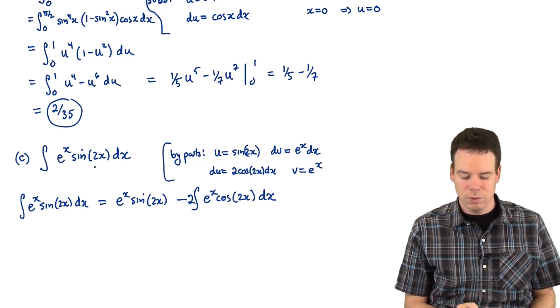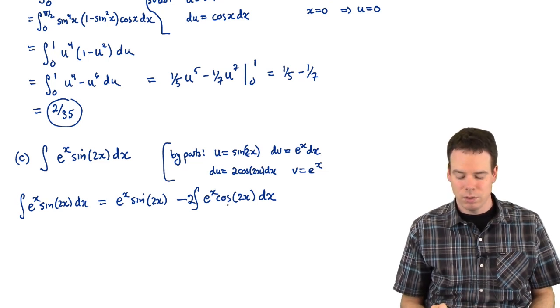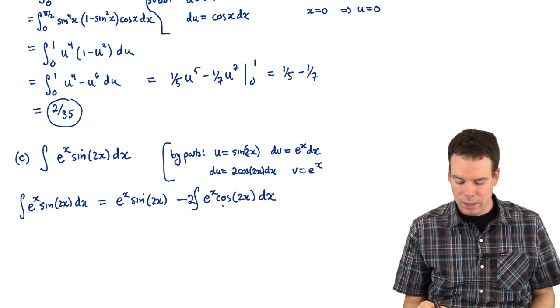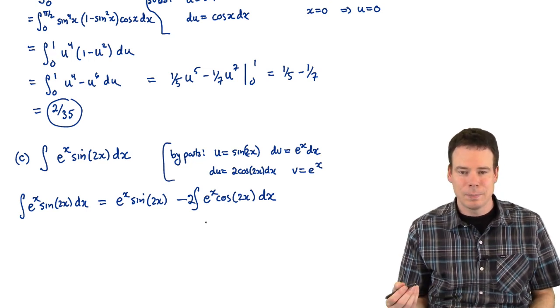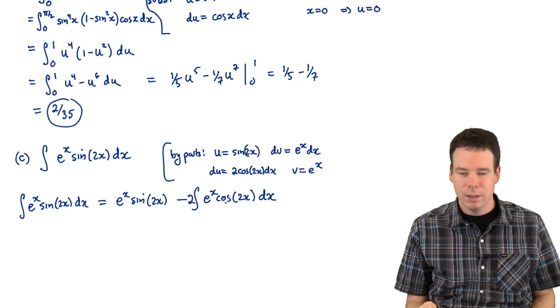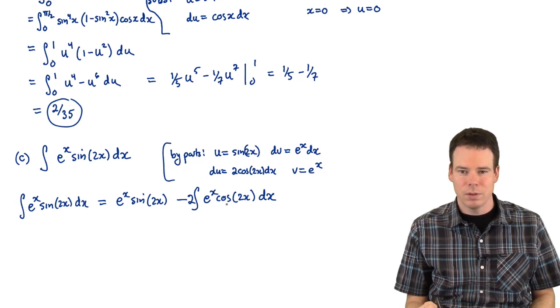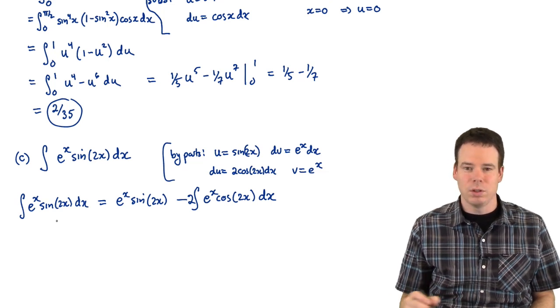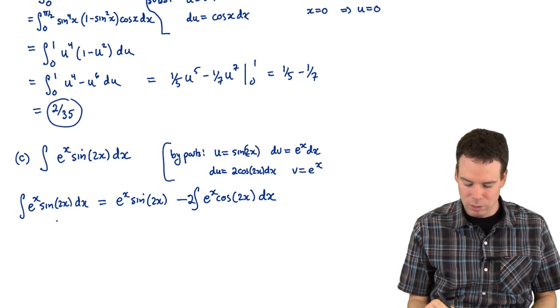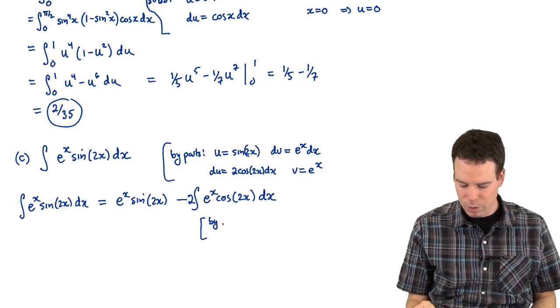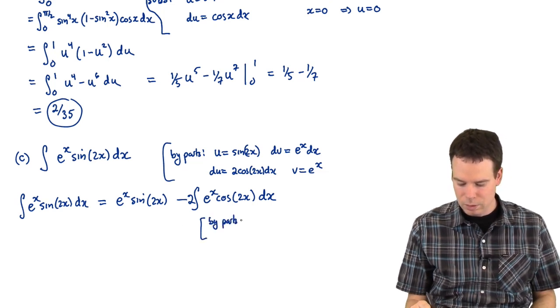Well we started with an integrand that had e to the x, an exponential, and a trig function. We've reduced it to another integral involving an exponential and a trig function, the cosine in this case. If we do it again, an application of by-parts again, that cosine should switch back to a sine function. And then that's the original integral we started with. So at that point we can use algebra. So we will do a by-parts application again.